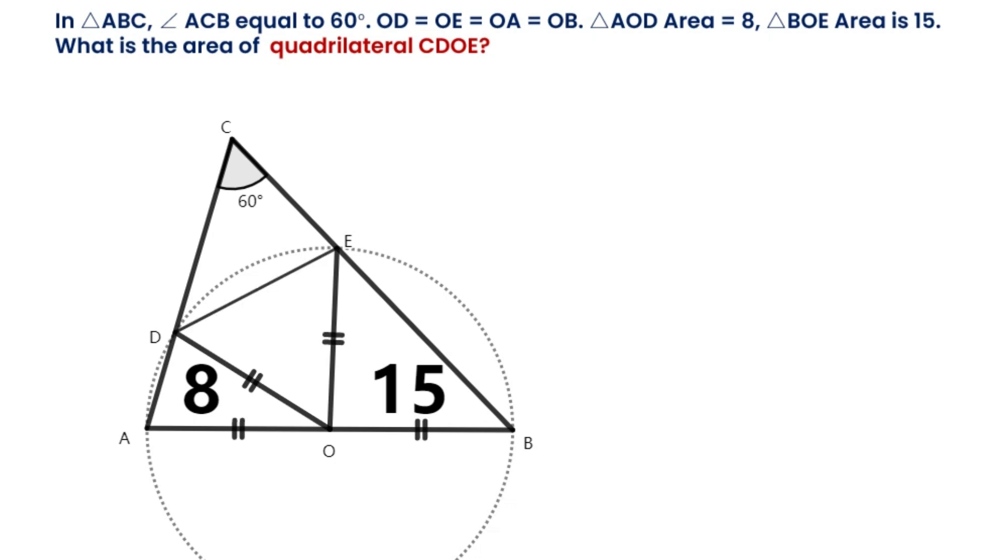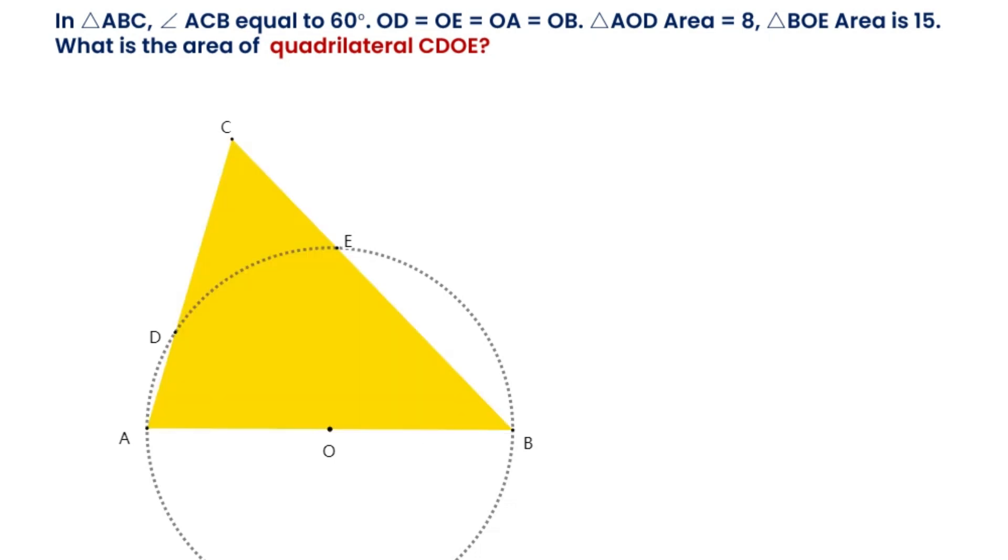Connect the segment DE. AC and BC are two secants of a circle that intersect at point C. So triangle CDE is similar to triangle CBA. If we connect AE, then AE is perpendicular to BC because AB is the diameter of this circle.